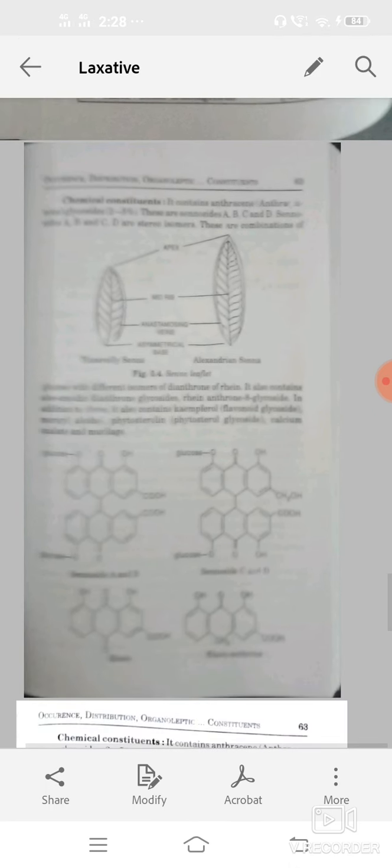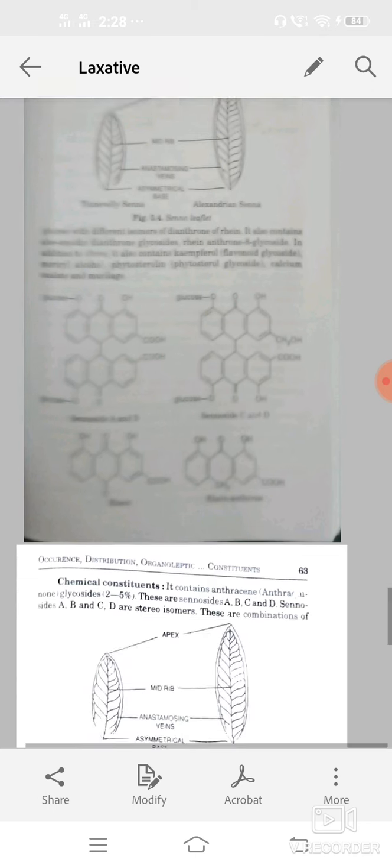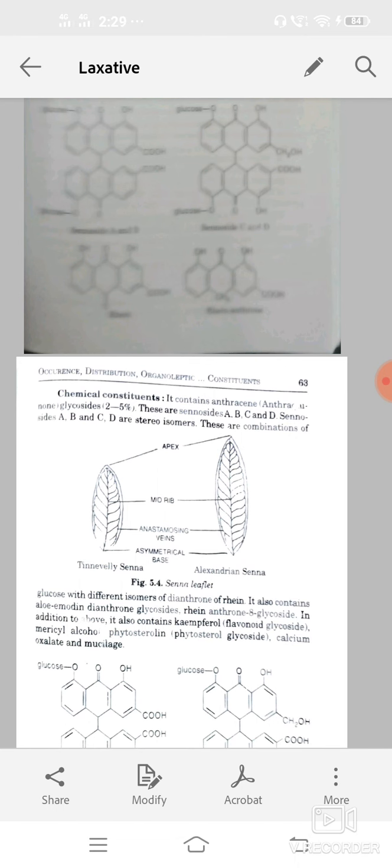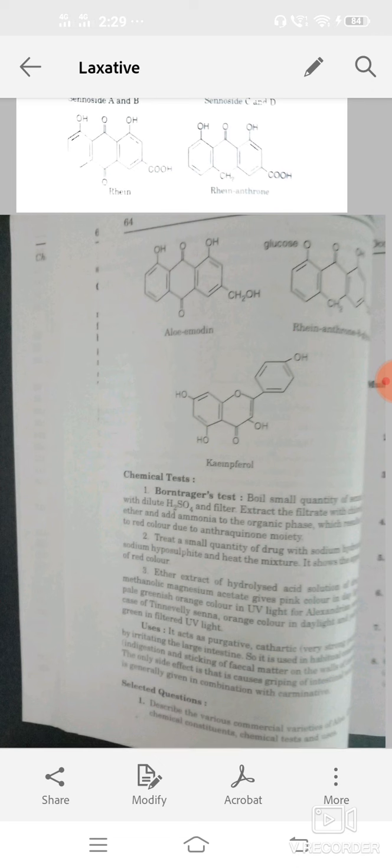Structures: sennoside A, sennoside B, sennoside C or D, rheinanthrone, 8 glycosides, kaempferol.